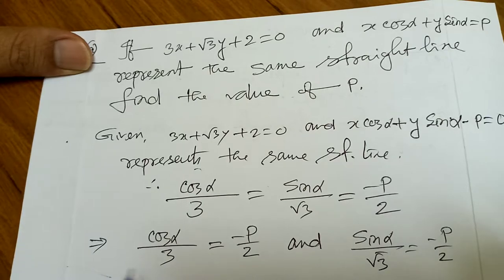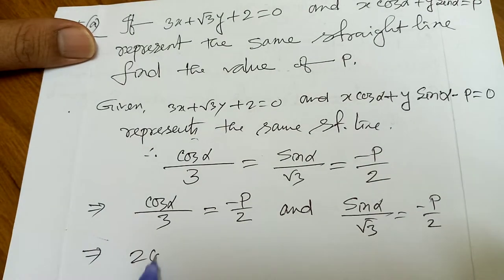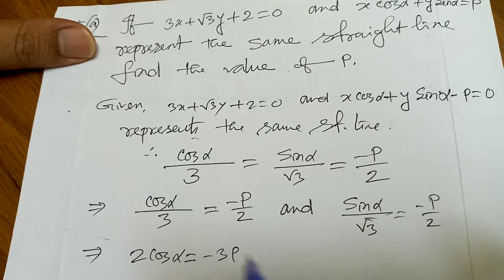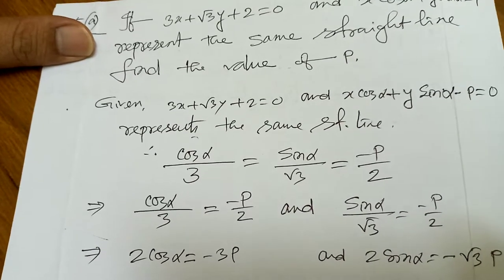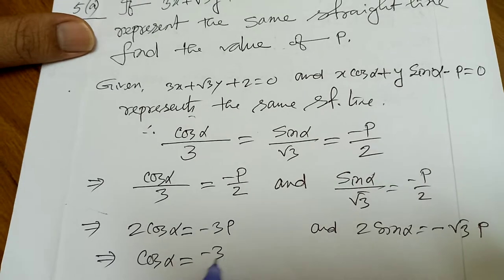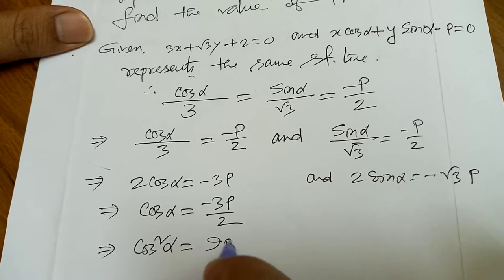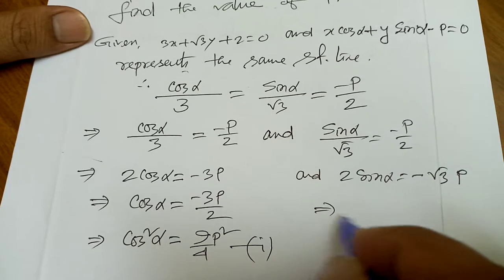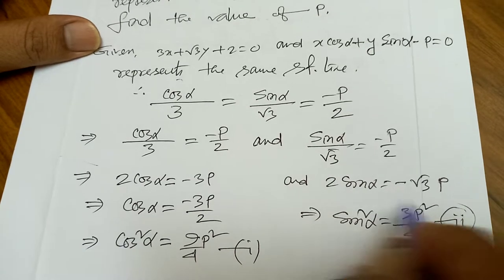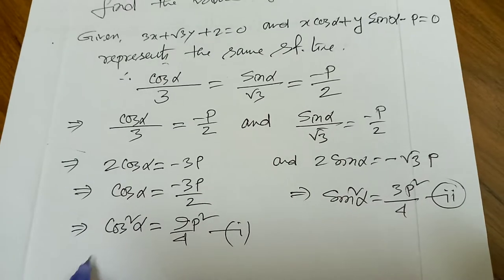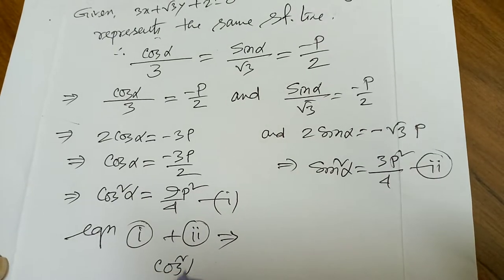We are going to find the value of p, so cosα and sinα should be eliminated. From the proportions: 2·cosα = −3p and 2·sinα = −√3·p, so cosα = −3p/2. Squaring both sides: cos²α = 9p²/4 — equation 1. Similarly, sin²α = 3p²/4 — equation 2.